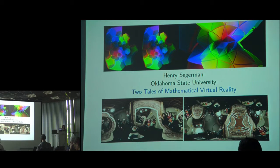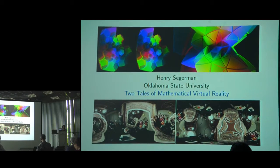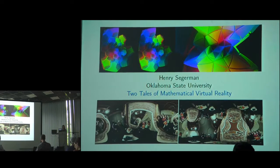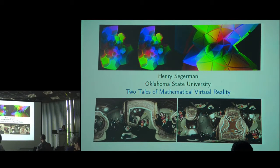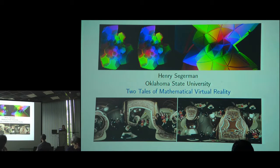Henry is currently assistant professor at the Department of Mathematics of Oklahoma State University. His CV reflects very nicely his achievements on both the theoretical aspect of geometry and also on the artistic side — mathematics and 3D printing, as well as the visual experience of complex geometry and topologies, which will be the subject of today.